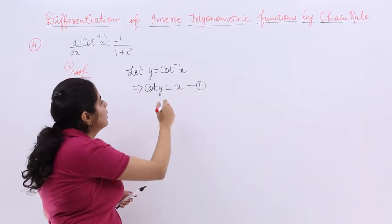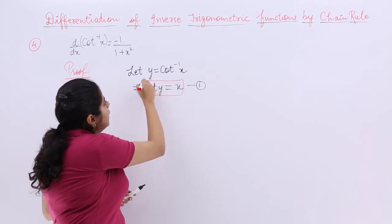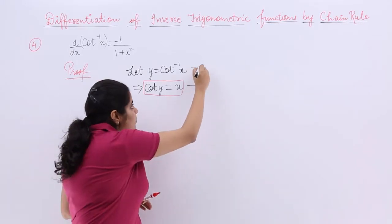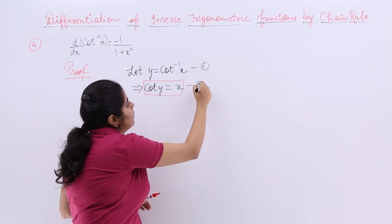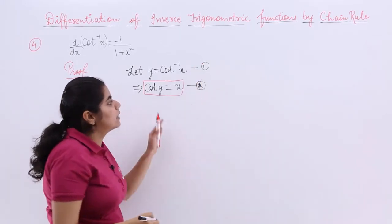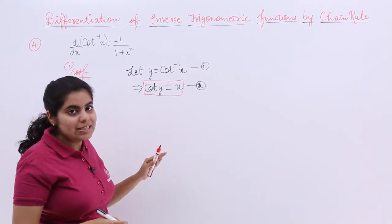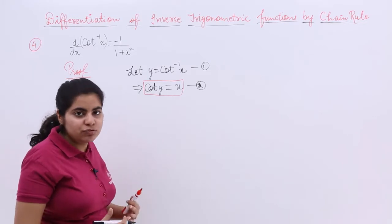This is your equation number 1. Even this equation may be needed for later steps. So let's name this as equation number 1 and this is equation number 2, so that it becomes easier for us to substitute later on. Now when cot y equals x, I need dy/dx form.